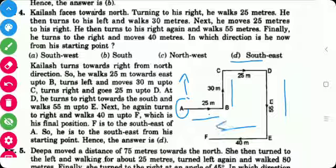So this direction is which direction? It is south. Means here he is facing in the south east direction. F is the south east of A.